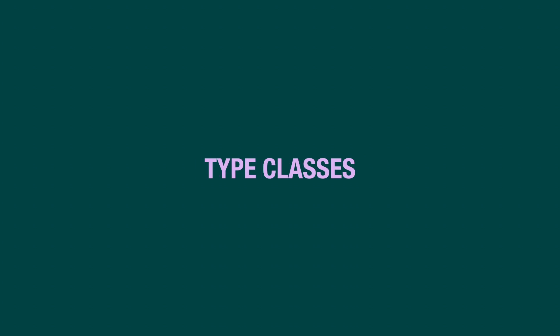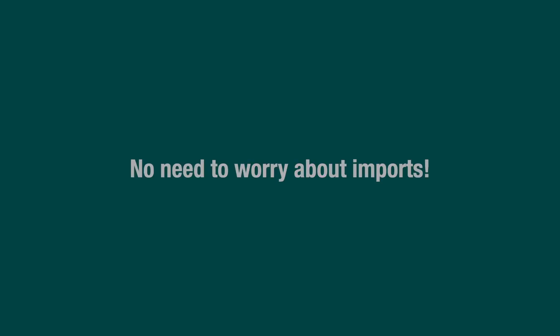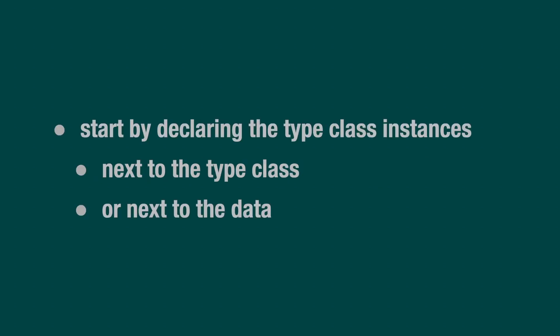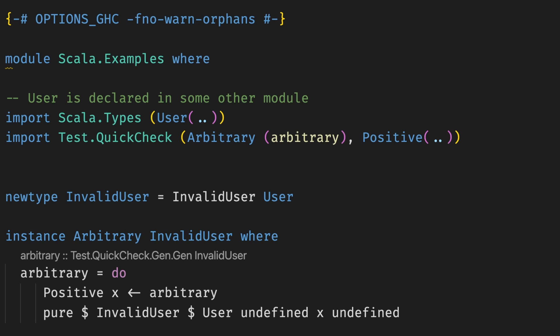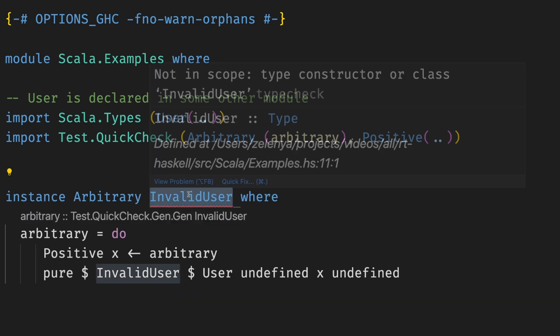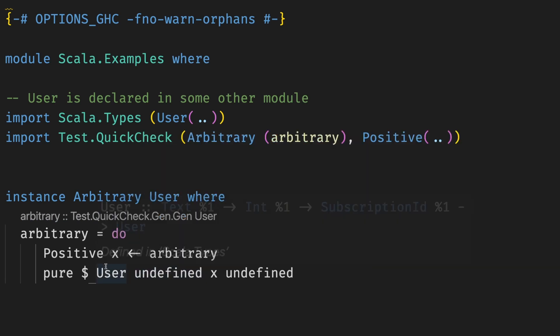Let's talk about ad hoc polymorphism. Unlike Scala, Haskell has built-in type classes. There is guaranteed to be at most one instance of a type class per type — so good news, no need to worry about imports. You can start by declaring type class instances next to the type class in the same module, or next to the data. Sometimes when you need a custom instance, you can introduce a newtype. Imagine you have a User data type declared in some other module and want to add an Arbitrary instance in some tests — you can create an InvalidUser, wrap the user around, create some Arbitrary instances, and test it this way. Sometimes you can add an orphan instance without using a newtype; it's not encouraged by the compiler or people on the internet, but it's still legal and sometimes unavoidable.